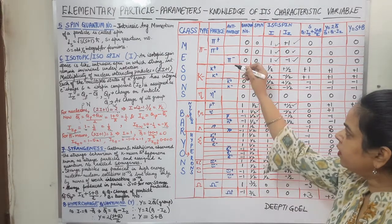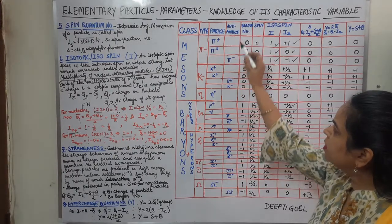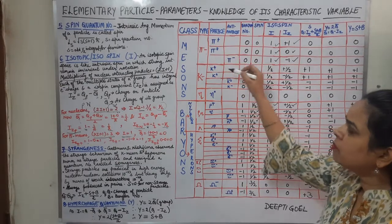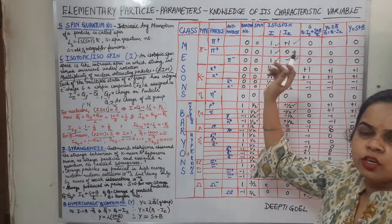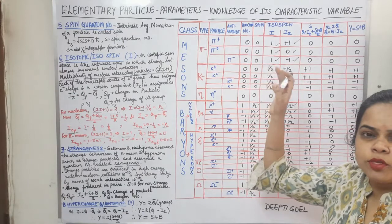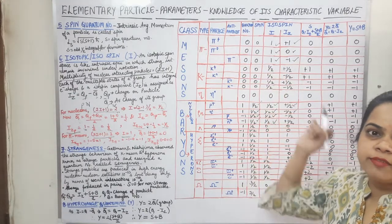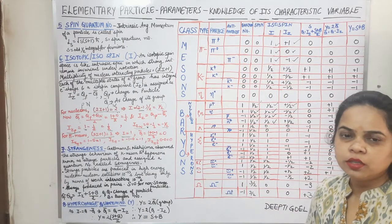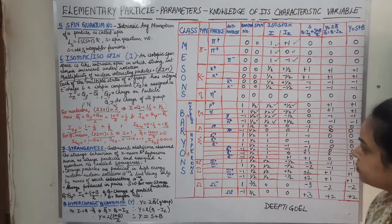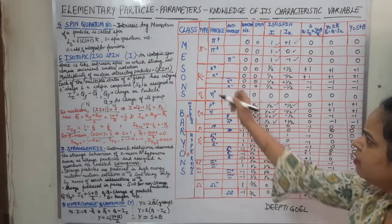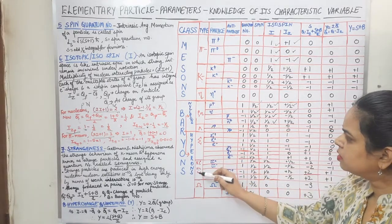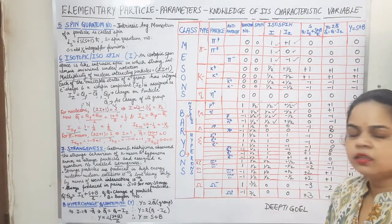Please don't get confused: pi minus is the antiparticle of pi positive, but in the multiplicity of the group we always state that pi comes in 3 forms — pi positive, pi negative, and pi neutral — so multiplicity for pi is 3. Similarly, we can calculate for k, eta, lambda, sigma, xi, and omega.